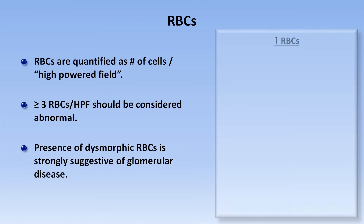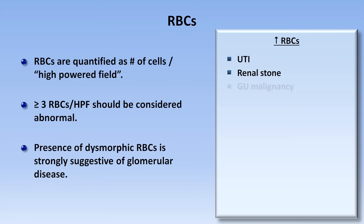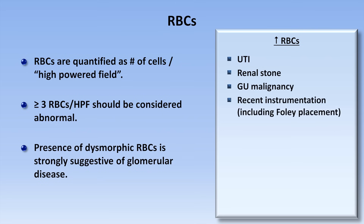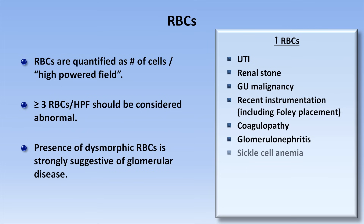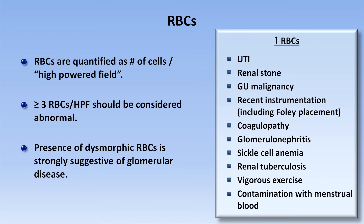There are many causes of RBCs in the urine. In very approximate order of decreasing frequency, RBCs can be caused by UTIs, renal stones, GU malignancies, recent instrumentation including Foley placement, coagulopathy, glomerulonephritis, sickle cell anemia, renal tuberculosis, vigorous exercise, and contamination with menstrual blood. While some etiologies of hematuria will be obvious from the history, some will not — including malignancy — which is why anyone with an elevation of urine RBCs should have it rechecked, and if persistent, should usually undergo a urologic workup.